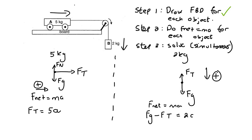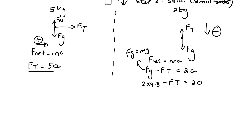So that equals 2a. We can work out gravity as two times 9.8, so: 2 × 9.8 minus FT equals 2a, giving 19.6 minus FT equals 2a. Step two is complete. Step three is just to solve — and it's simultaneous. Both equations have FT and a as unknowns. Some learners make the equations equal to each other; some use substitution. I'm going to go with making them equal to each other.